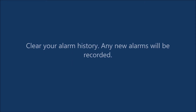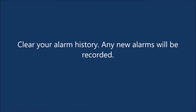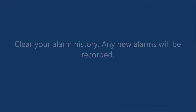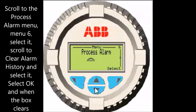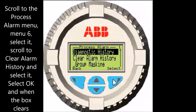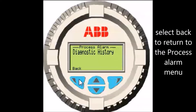Clear your alarm history so any new alarms will be recorded. Scroll to the process alarm menu, menu 6, and select it. Scroll to clear alarm history and select it. Select OK, OK, and when the box clears, select back to return to the process alarm menu.